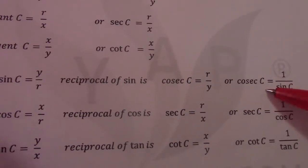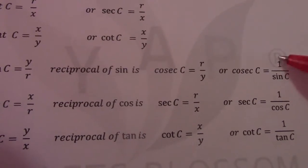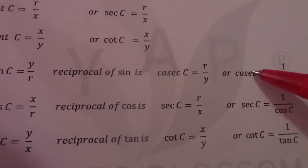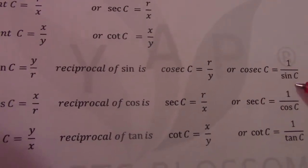Or we can say cosec c equals 1 over sin c. Very important, you will see when we are working out angles. We have to calculate using calculator, we always have to change cosec c to 1 over sin c.